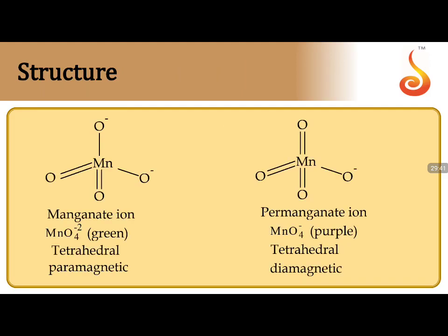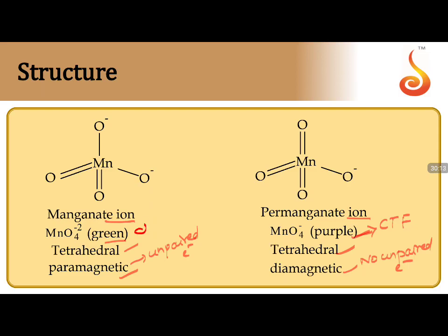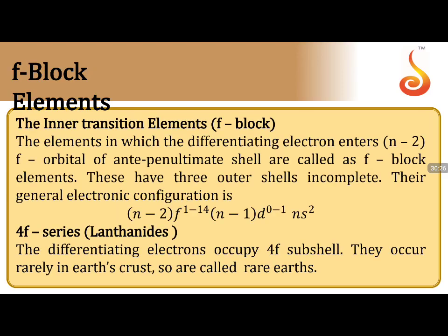Structure of KMnO₄ and MnO₄²⁻: Manganate ion (MnO₄²⁻) is green, tetrahedral, and paramagnetic due to an unpaired electron. Permanganate ion (MnO₄⁻) is purple, tetrahedral, and diamagnetic — no unpaired electrons. The green color of manganate is due to d-d transitions, while the purple color of permanganate is due to charge transfer phenomena between ligand and central metal ion.